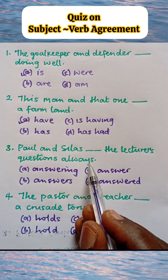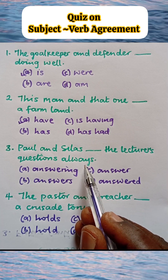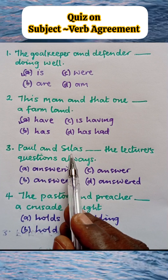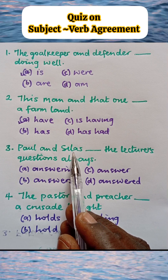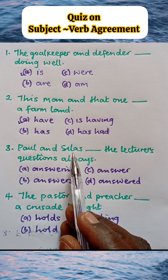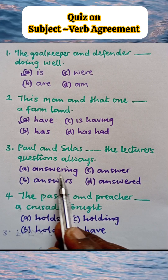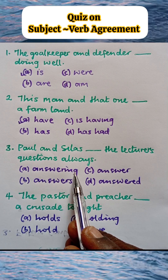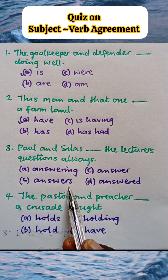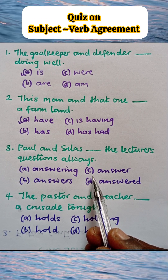Number three: Paul and Silas blank the lecturer's question always. Note the term 'always' shows the action is a regular action. Paul and Silas are two separate subjects since they don't carry any determinants themselves, so they take a plural verb. Options: A - answering the lecturer's question always, B - answers the lecturer's question always, C - answer the lecturer's question always, D - answered the lecturer's question always.